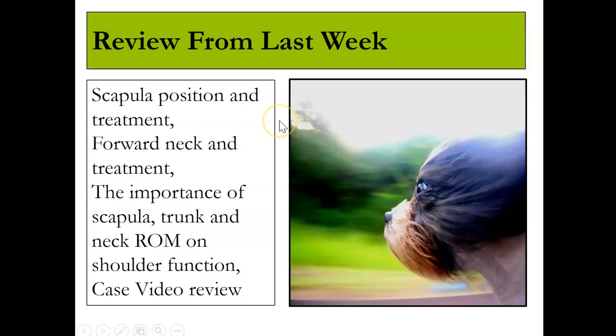Scapula position and treatment — what did we learn from last week? The scapula, when it's where it should be — retracted, back, adducted, tight against the spine — you have so much more movement. If it's forward, if it's protracted, you lose movement in the shoulder. Remember when you slouched and tried to move your shoulders, you couldn't move them much at all. Then with really good posture you had so much more movement — it just opened up the space within the glenohumeral joint because of scapula position.